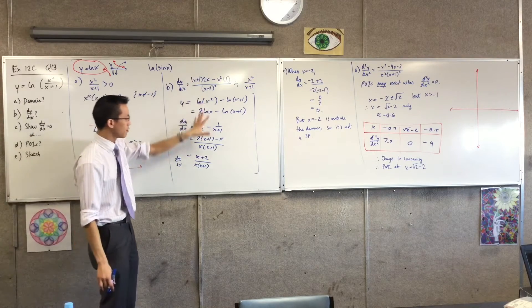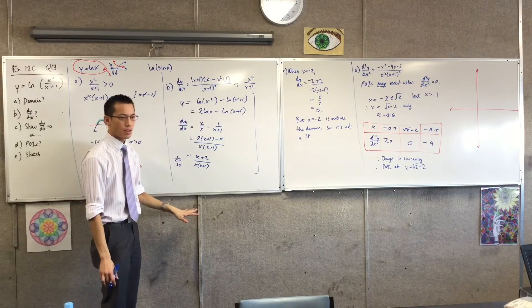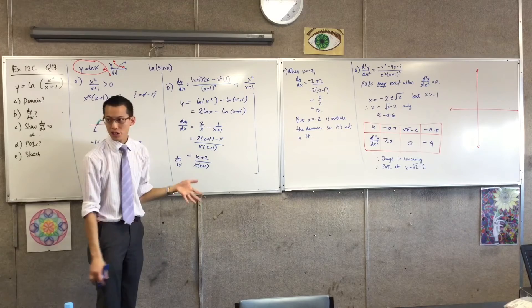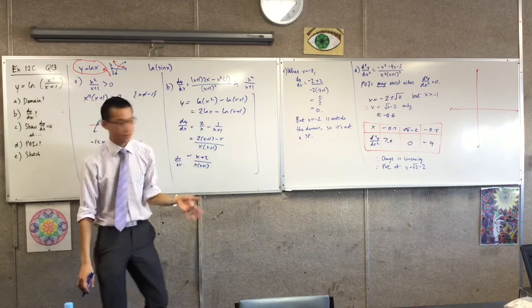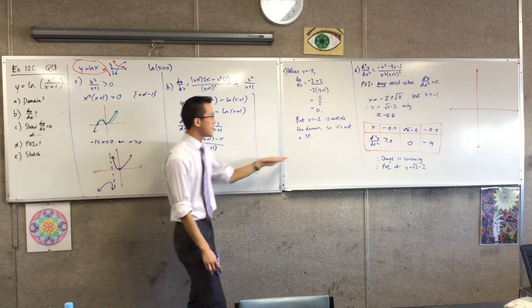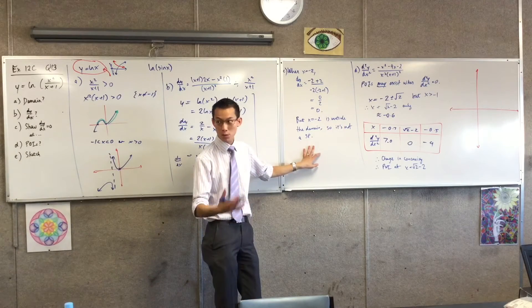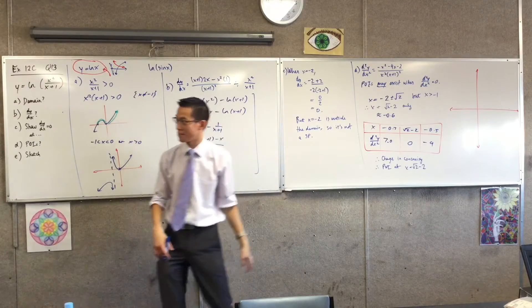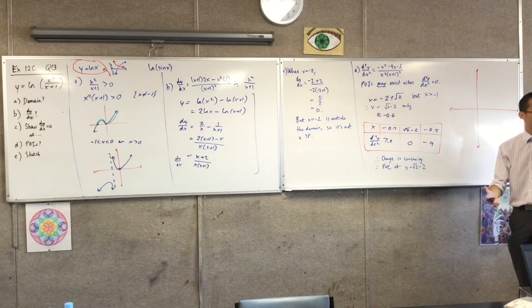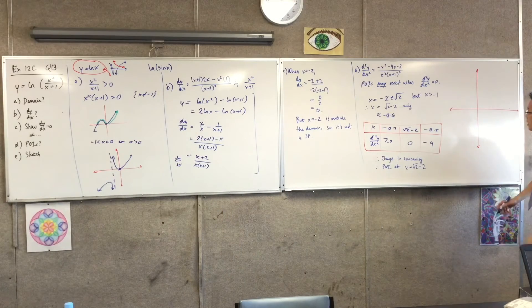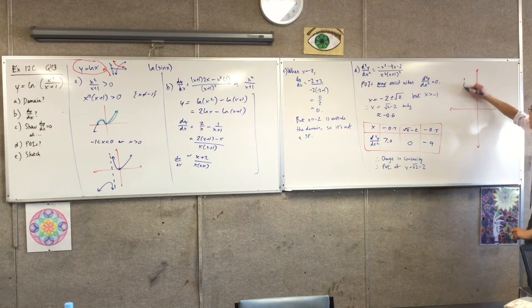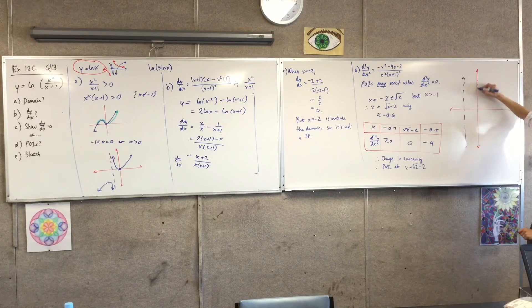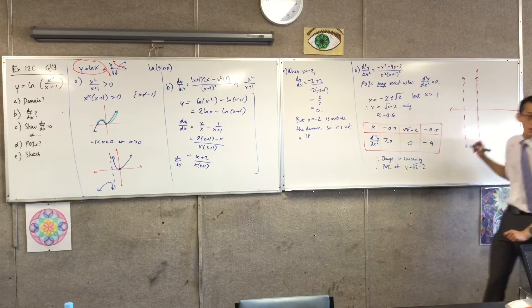When I went through this, I was trying to find a stationary point, and I determined the only possible stationary point is not actually a stationary point. The domain restriction tells me I'm going to have some asymptotes like so.